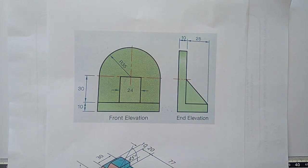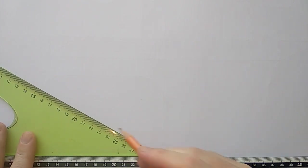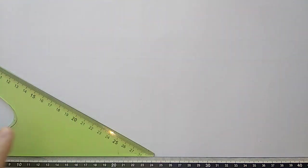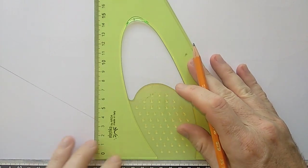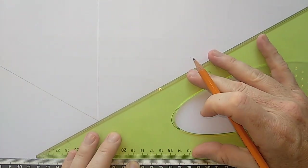So first step in the process is to get your axes drawn. Pop that out of the way. So isometric axes are drawn on a 30-degree set square. Pop them down here. Again, these will be nice light construction lines.